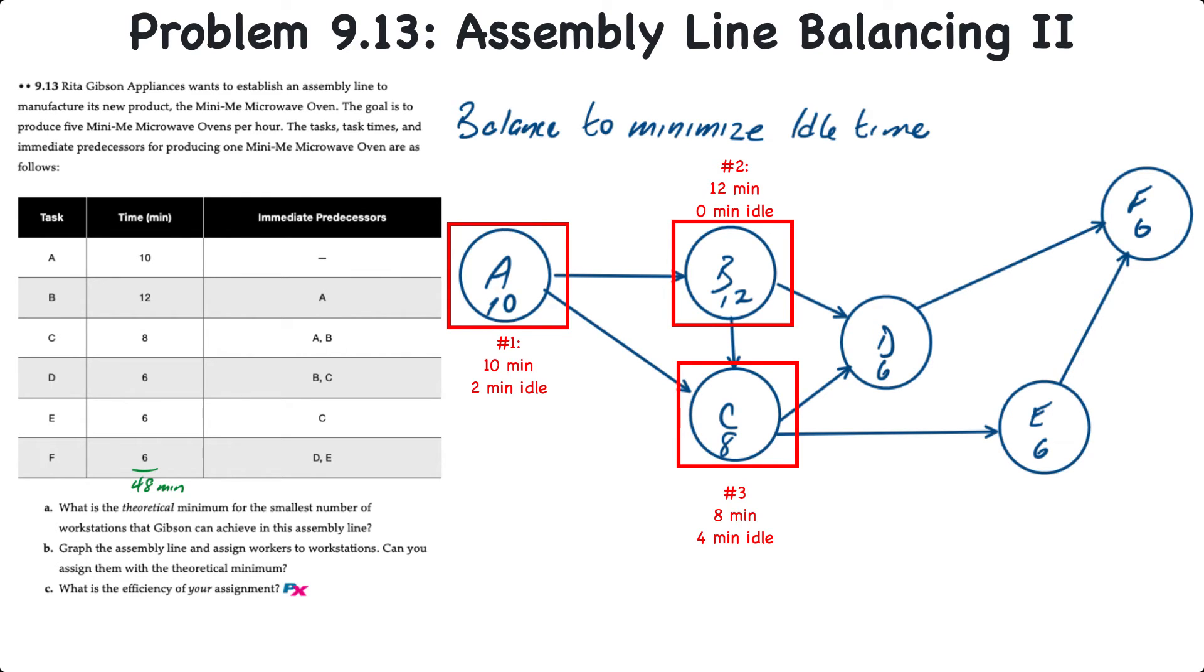Now since the three remaining tasks, D, E and F, all have the same task time of 6 minutes and are in close proximity, any two of those could be combined together to make a 12 minute station time.